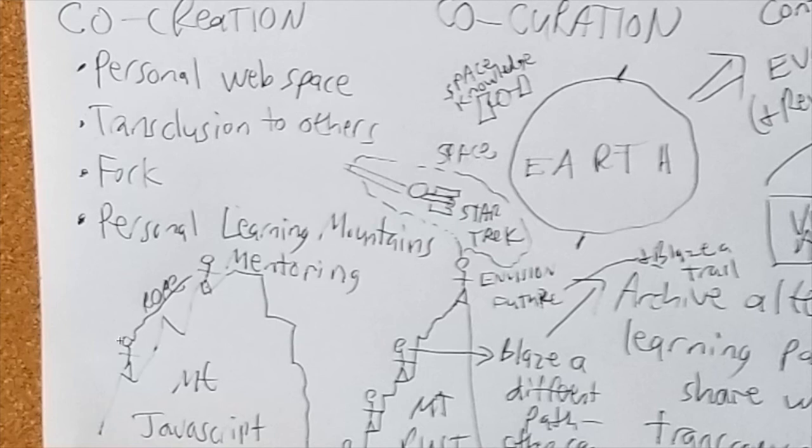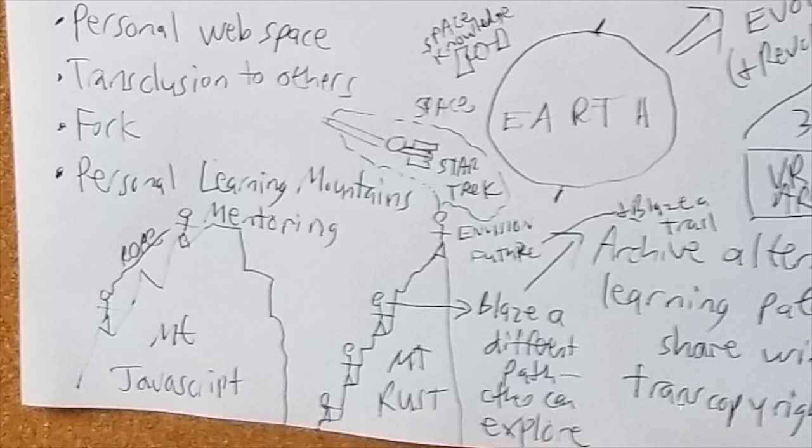All right, so here is somebody mentoring me on Mount JavaScript, throwing me down a rope, trying to pull me up to the next level. That's what I would like to see implemented in a decentralized educational system. And then, so here are people climbing Mount Rust. Maybe this person blazes a different path that can go around here and go up to the summit a different way. And maybe they can put that path in a living document and under construction and maybe get some input from people lower. Hey, does this help you understand this? And maybe there could be co-creation. That person's got a great idea that they can do a pull request and this person could accept it or reject it.